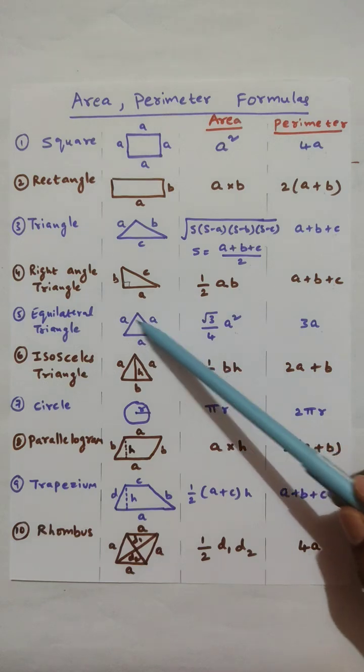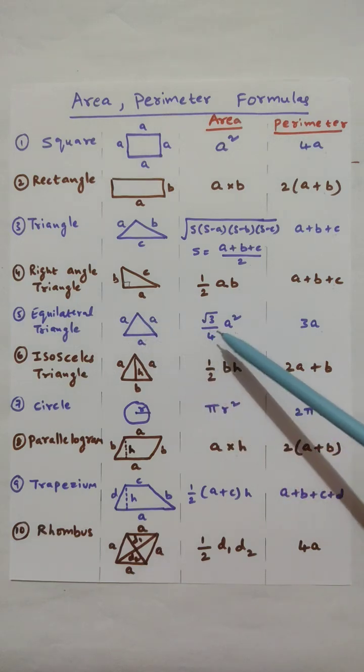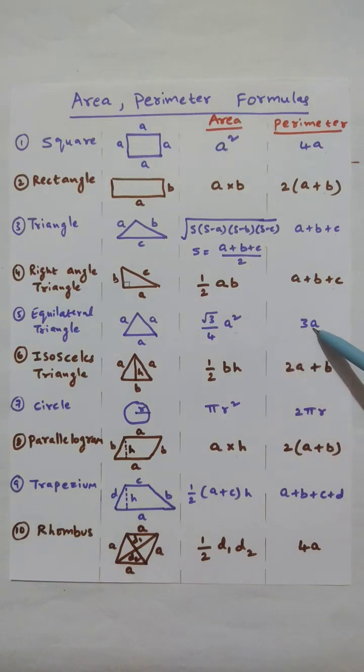Equilateral triangle where all the 3 sides are equal in length. Area is root 3 by 4 A squared. Perimeter of an equilateral triangle is 3 into A.